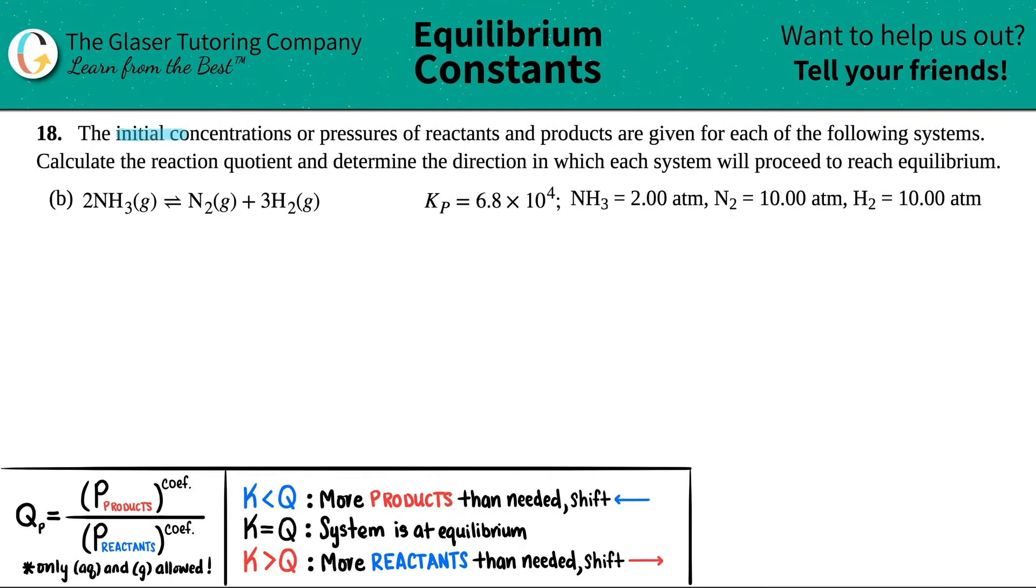Number 18. The initial concentrations or pressures of reactants and products are given for each of the following systems. Calculate the reaction quotient and determine the direction in which each system will proceed to reach equilibrium.